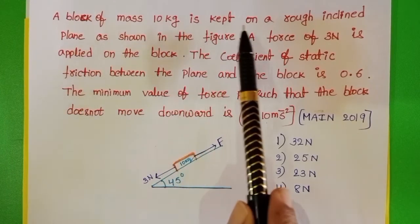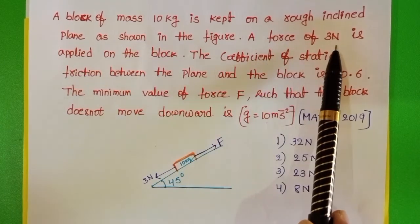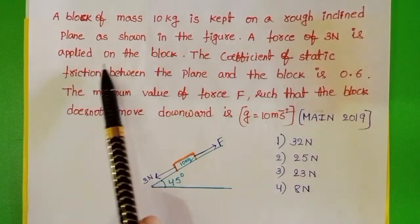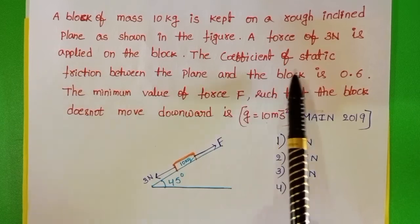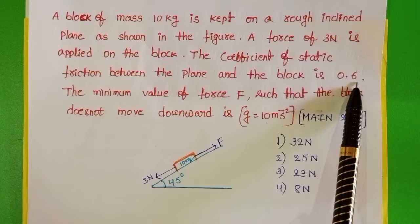A block of mass 10 kg is kept on a rough inclined plane as shown in the figure. A force of 3 N is applied on the block. The coefficient of static friction between the plane and the block is 0.6.